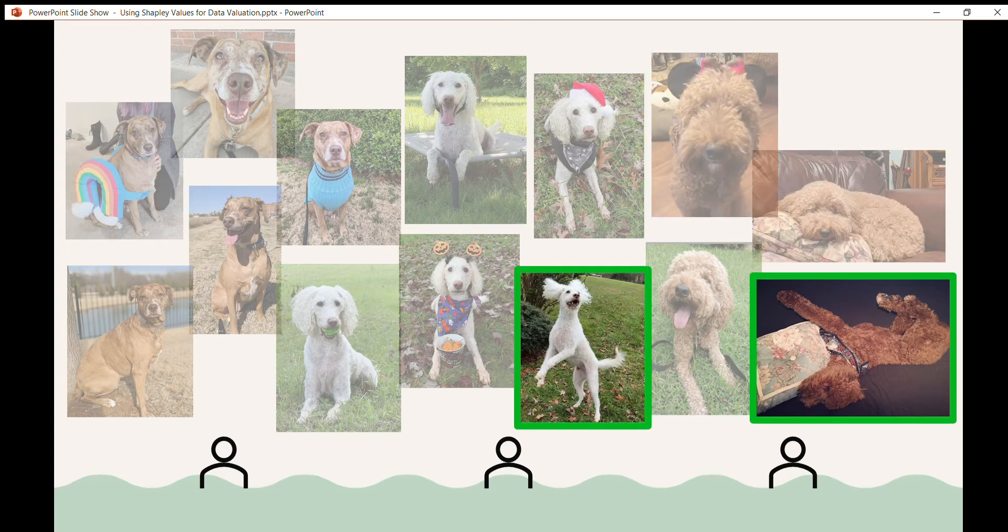Maybe the data valuations give really low data values to these two images, and we look at those, and they're dogs that are in unusual positions. So it might make sense that these would have low values because they're kind of outlier points. So we might want to collect more data of dogs in unusual positions to help the model generalize.